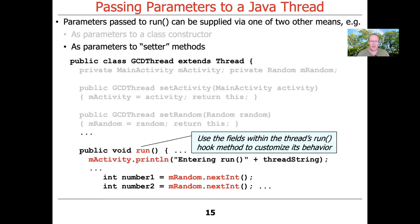So let's take a look at how this would work. So here's the run hook method. This is what GCD thread does. You can see it uses mActivity in order to print information when something is going to be entered into the run method.